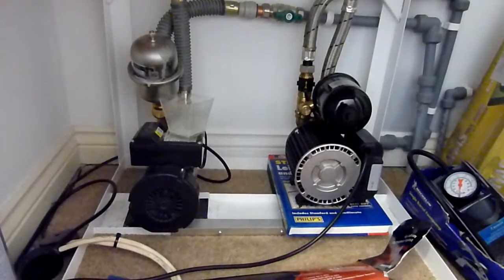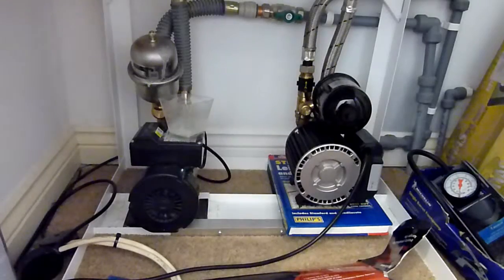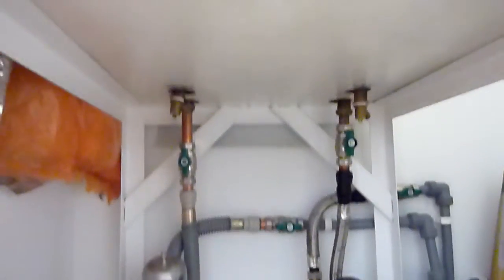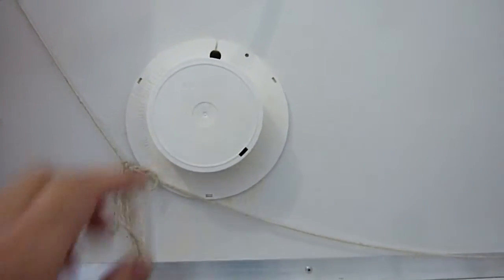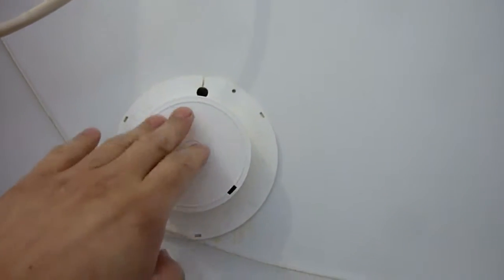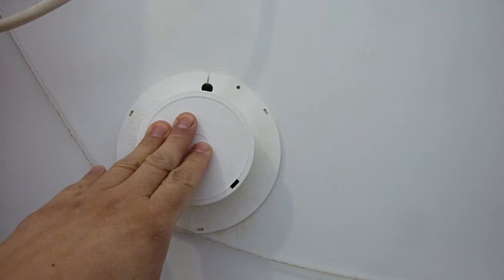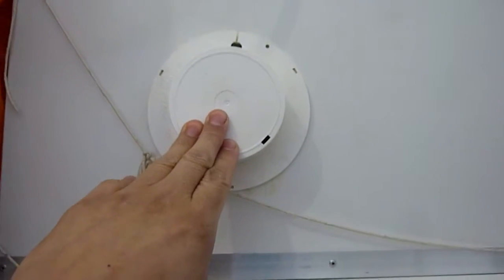In this video, I am going to be changing the immersion heater on my boiler system. On my boiler system, I have one below on the tank and one above. The one below is the one I usually use, and if you're going to heat water, it makes sense to have the element right at the bottom.